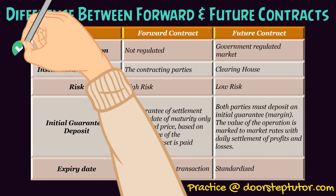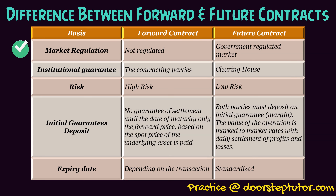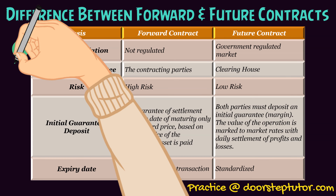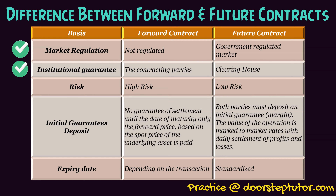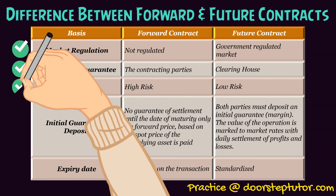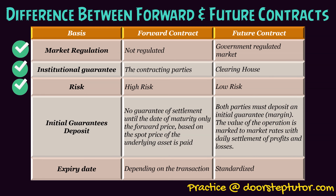Next difference is market regulation: forward contracts are not regulated by any governing body, whereas futures contracts are regulated by the Commodities and Futures Trading Commission, which ensures free and fair trade transparency. Next is institutional guarantee: in forward contracts the contracting parties take the guarantees themselves, whereas in futures contracts clearing houses take the guarantees for the contracting parties. As no clearing houses take guarantees for counterparties in forward contracts, there is a high risk of default, whereas there is very low risk in futures contracts because they are regulated by government authorities and clearing houses take the guarantees.